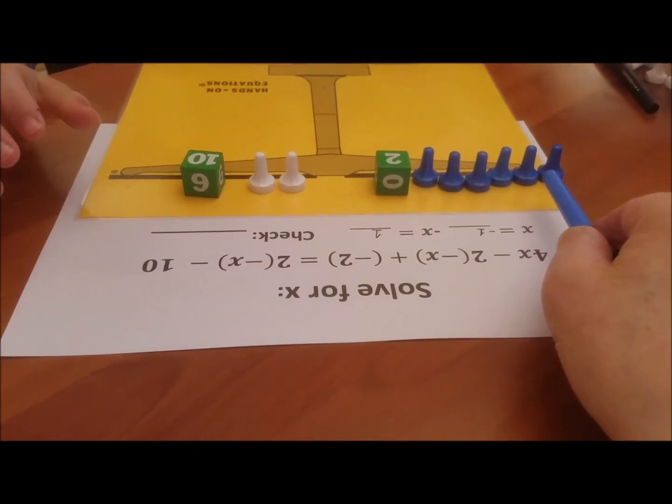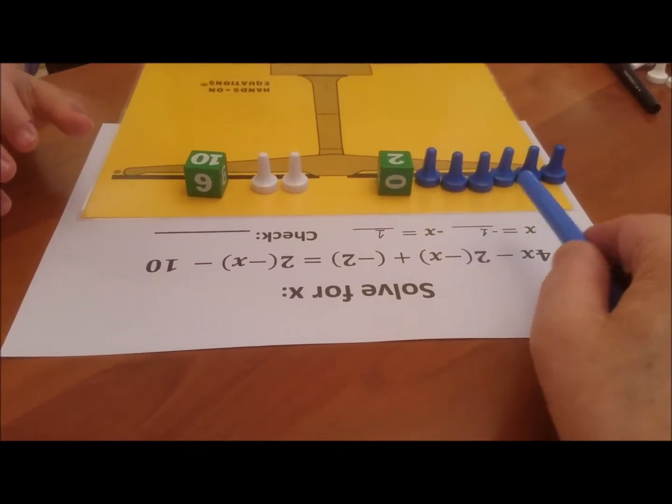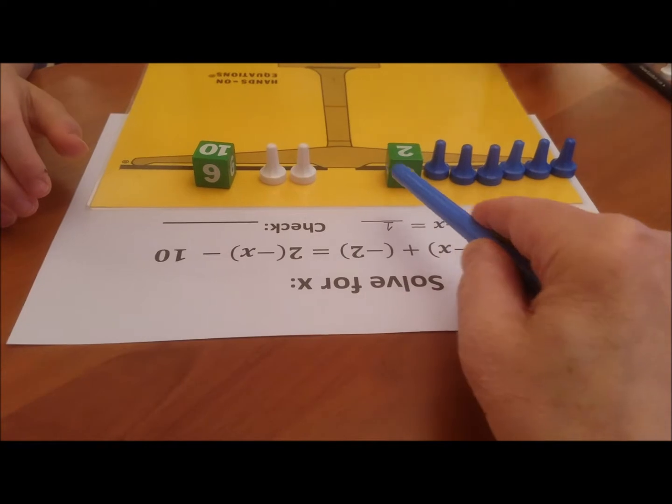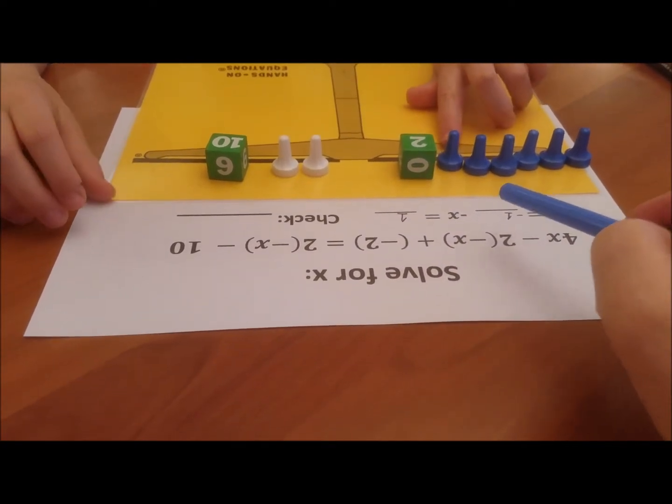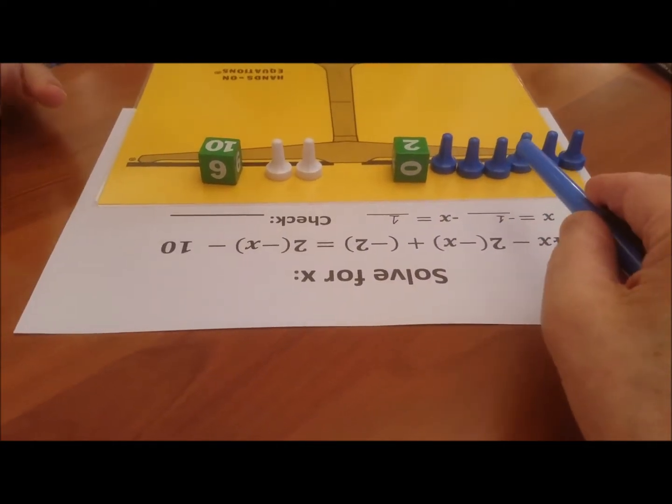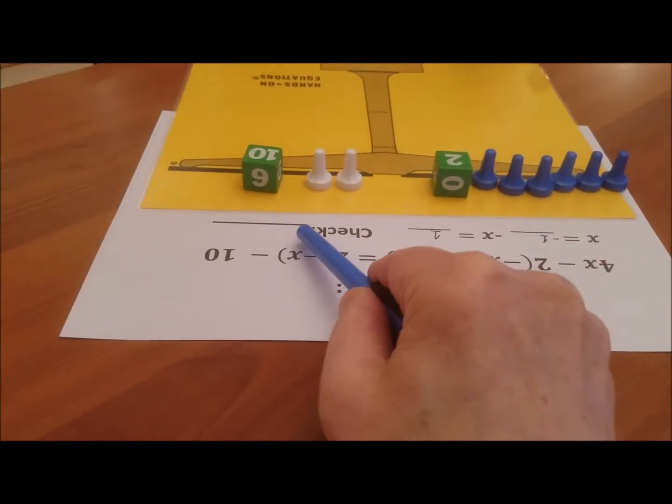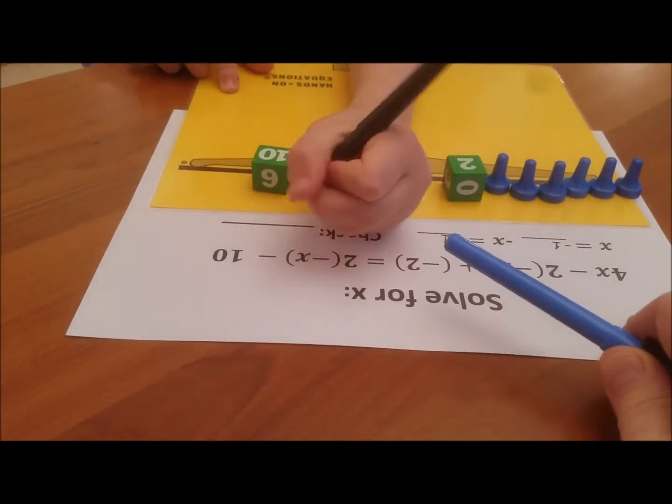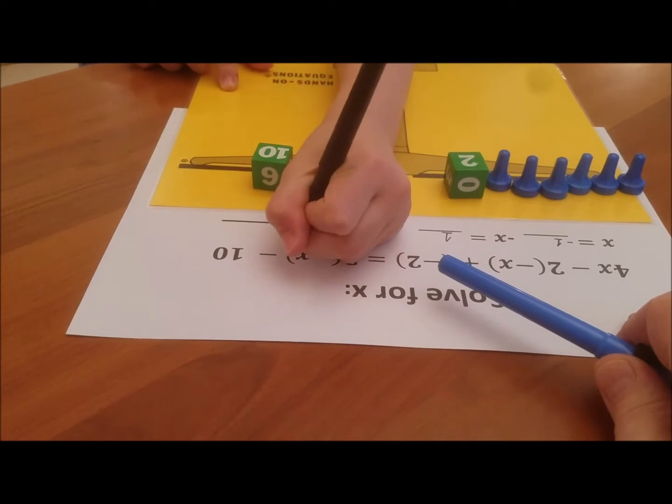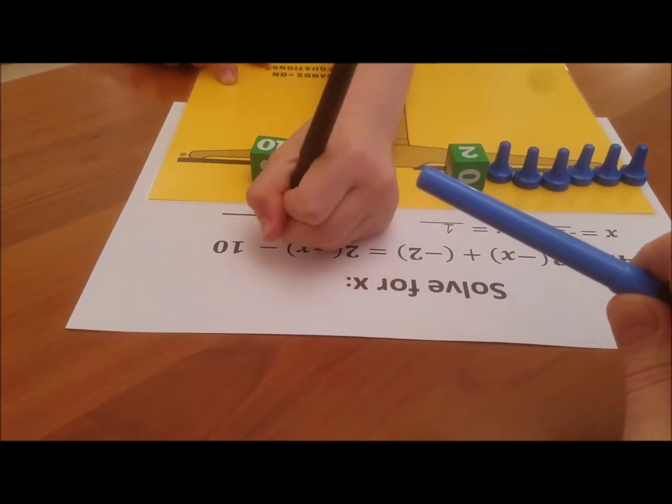Each x is how much? Negative one. Okay, so what do we have here? Negative eight. Okay, take the pen and over here write a large negative eight one time. Good, that's fine. Good. Equals.